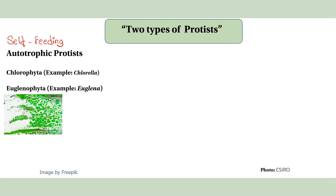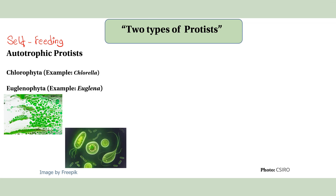Euglena is an animal-like protist. Euglena has a flagellum as a locomotory organ. Euglena is an example of a flagellated protist. Euglena can also be autotrophic.